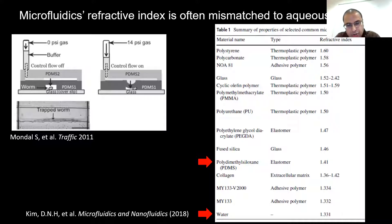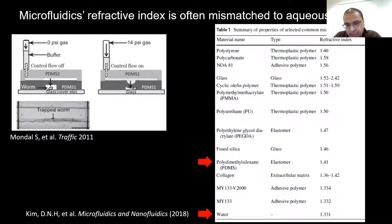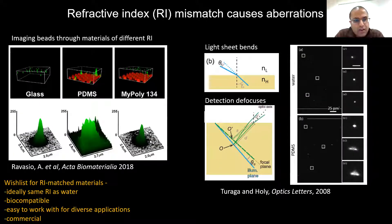One of the challenges in doing microfluidics is that the refractive index of the material is often mismatched to the aqueous sample. If you think about PDMS, which is the polymer most often used in microfluidics, the refractive index of PDMS is 1.40, but the refractive index of an aqueous specimen is going to be close to water, 1.33.